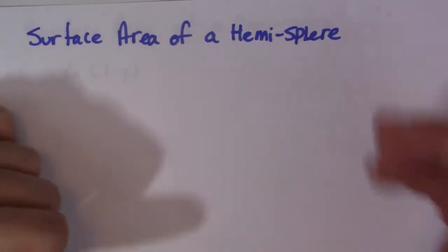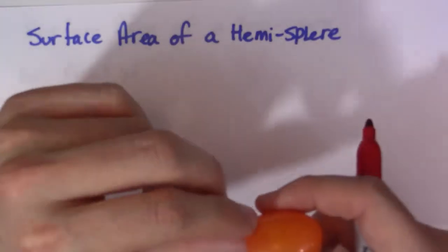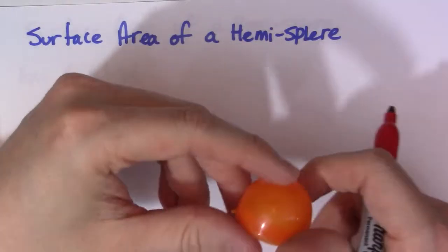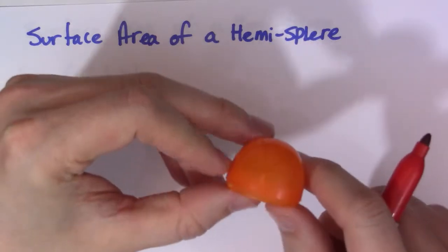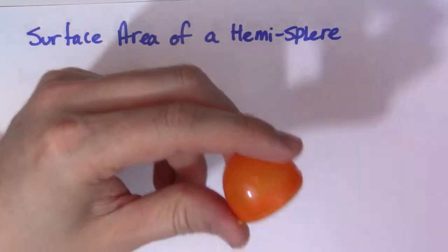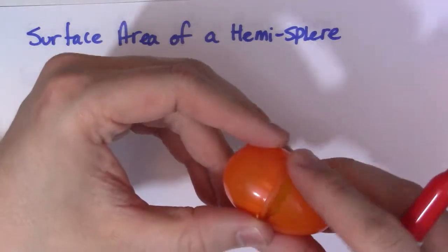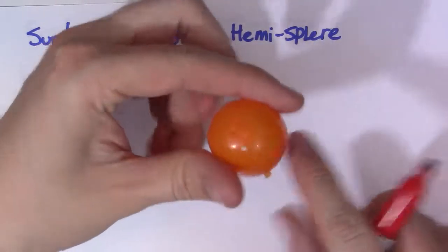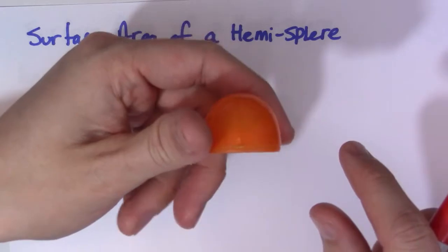So a hemisphere is exactly half a sphere. I showed this when I did the volume. This is my son's easter egg and it's not exactly a sphere, it was an egg obviously. Here's the other half of it, but if you kind of visualize this being a sphere, a hemisphere is exactly half of a sphere.